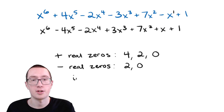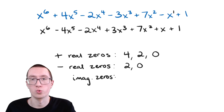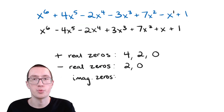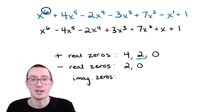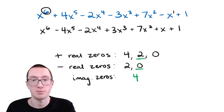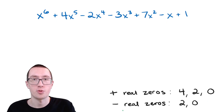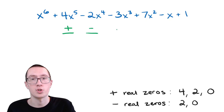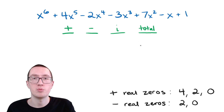Our last possibility is imaginary zeros. There's no rule of sign changes to figure it out — imaginary zeros are just whatever zeros are left over after accounting for positive and negative ones. Because we know we have to have six zeros total. So for example, if we found two positive real zeros and no negative real zeros, that only adds up to two, and we need six, so the other four must be imaginary. Now we're going to make a table listing all the different possibilities.